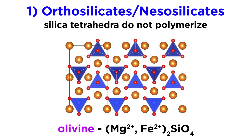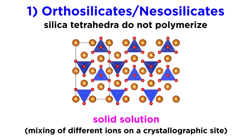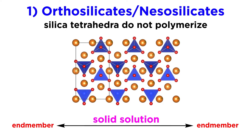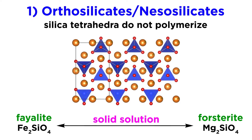Olivine has two octahedral sites that contain medium-sized divalent cations, in addition to its tetrahedral silicon. In a typical olivine, the octahedral sites contain a mixture of magnesium and ferrous iron, with more magnesium than iron. Geologists call this mixing of different ions on a crystallographic site solid solution. In the previous tutorial, we discussed end members, which are minerals that represent the chemical extremes of a group. In the olivine group, fayalite, or Fe2SiO4, is the iron end member, and forsterite, or Mg2SiO4, is the magnesium end member, with complete solid solution existing between them.